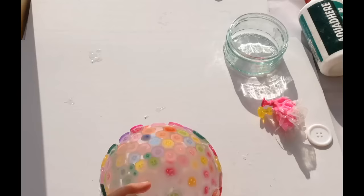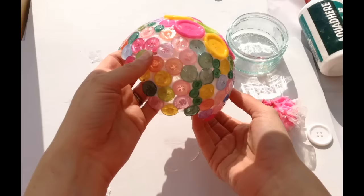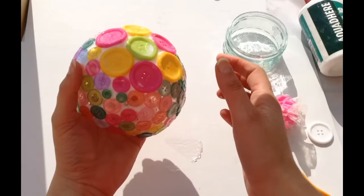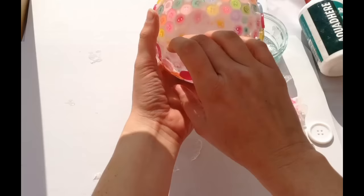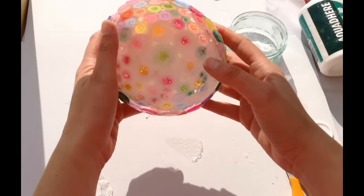So there you go. It's our beautiful button bowl. All the buttons have stuck. You can see here where it's still a bit white. That's okay. We'll just let it dry a little bit longer. And likewise, the white on the inside, all that is, is the glue that hasn't dried completely. When it dries, it'll be clear just like we promised.